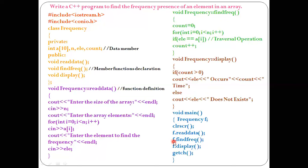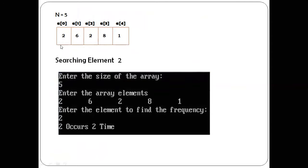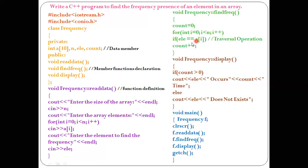f dot findFreq — f is the object, dot is the member access operator, findFreq is the member function. It takes us to the findFreq definition — void return type, frequency class name, scope resolution operator, no parameters. The variable count is initialized to zero. The for loop starts: i equals zero, i is less than n (five), condition true. If element equals a[i] — element is two, a[0] is also two — condition true.